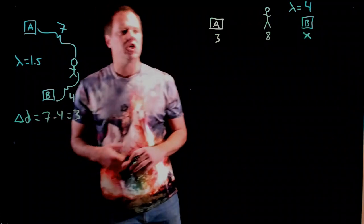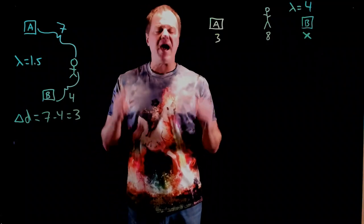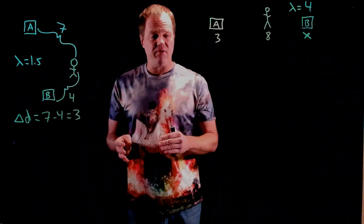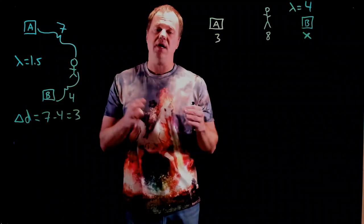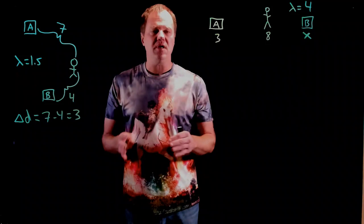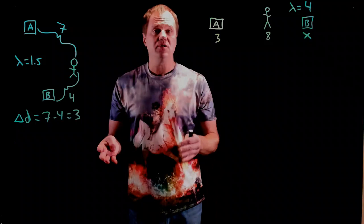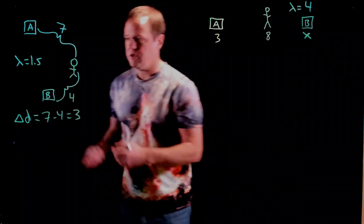To determine the type of interference, what I recommend you do is take the path difference and divide by the wavelength. When you do that, if it's an integer, you know that it's constructive. If it's a half integer, you know it's destructive. And if it's neither of those things, then the interference is neither constructive nor destructive. So, let's do that.